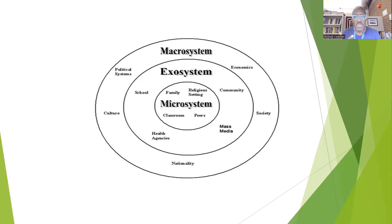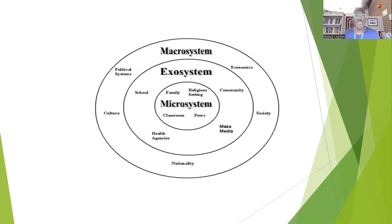More specifically for us in social work, we look at systems in a different way, because when we apply the various theories of social work, we apply them at the system level. A system can be — looking at the diagram — a microsystem: you as an individual, your family, a classroom, or a religious setting.